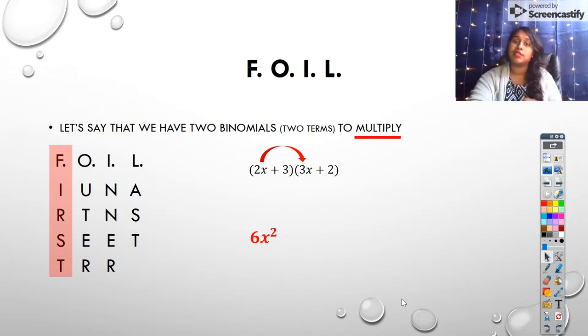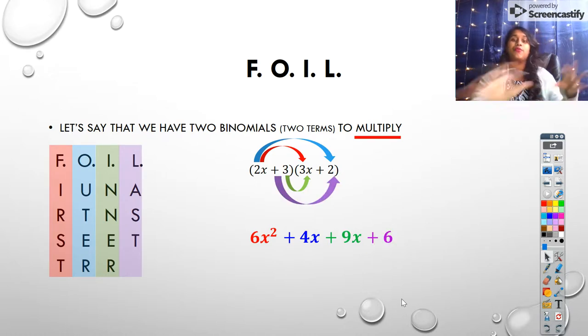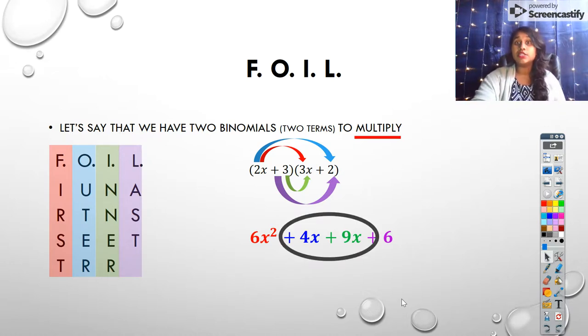Well, let's see. That first term is going to become 6x². Second term becomes 4x. Inner term becomes 9x. Last term becomes 6. I put either plus or minus in between, depending. You just keep the signs. Then you combine like terms, 4x and 9x combine, and that becomes 6x² + 13x + 6.